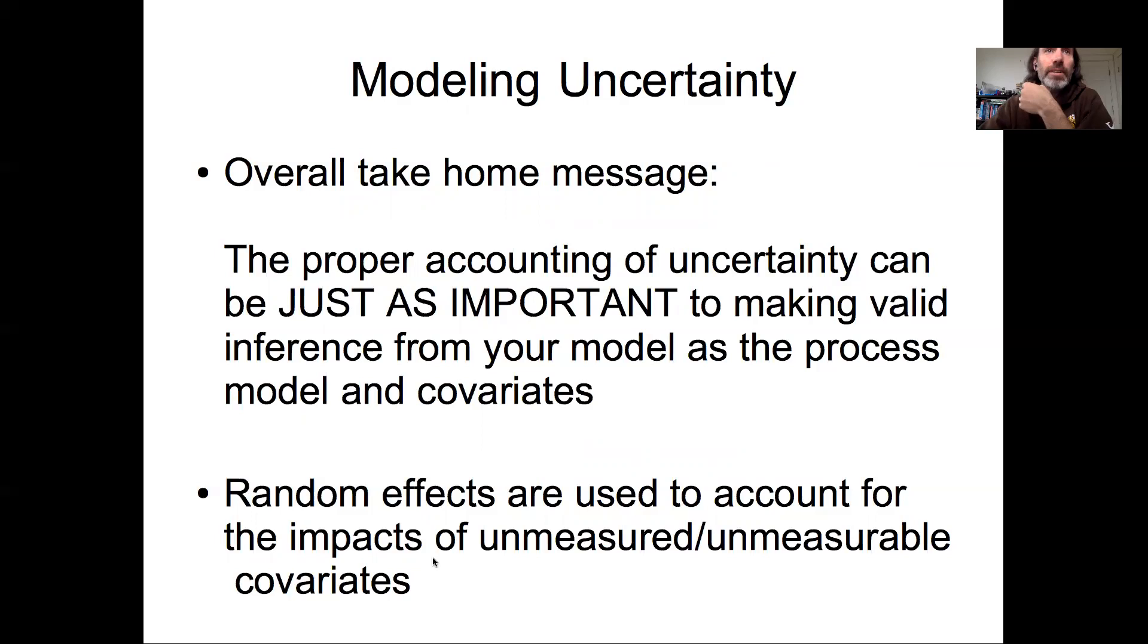So some important overall take-home messages about modeling uncertainty through random effects in hierarchical models is it can be just as important to account for sources of uncertainty if you're trying to make valid inferences and good projections as it is to add additional processes to your process model or additional covariates to your process model.